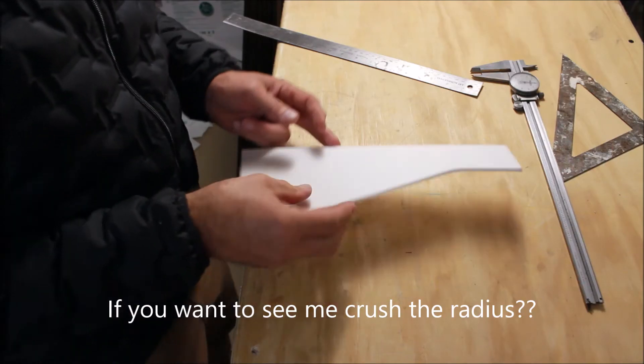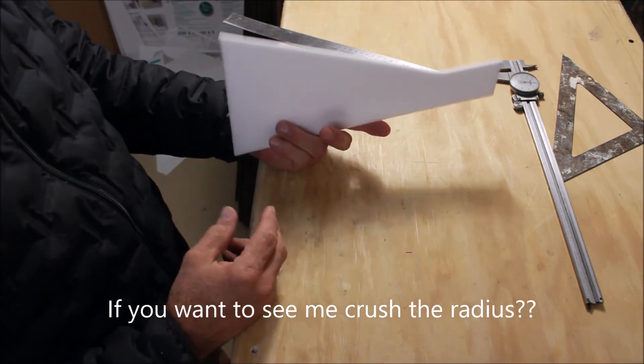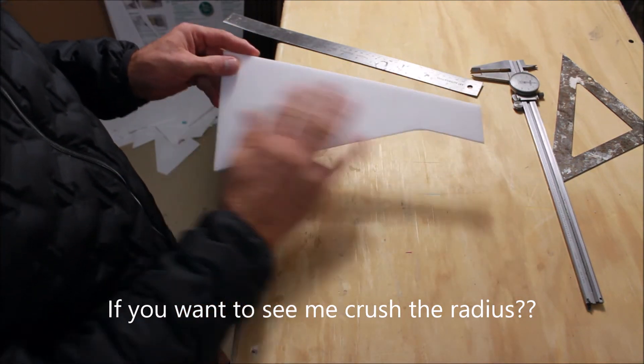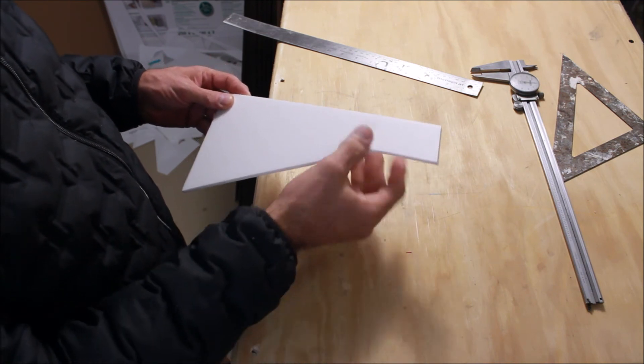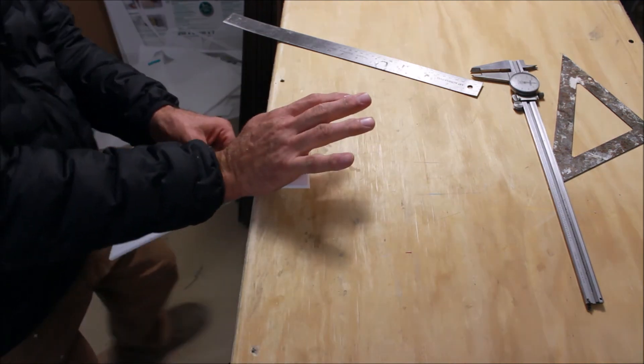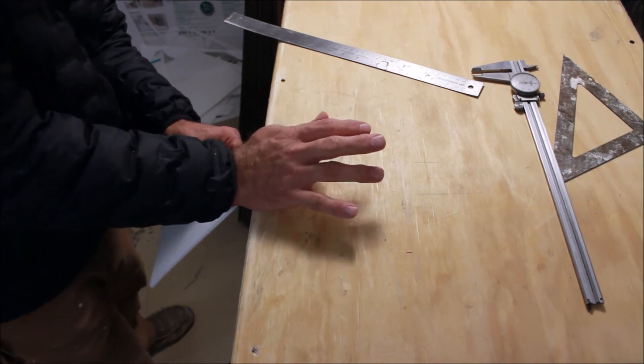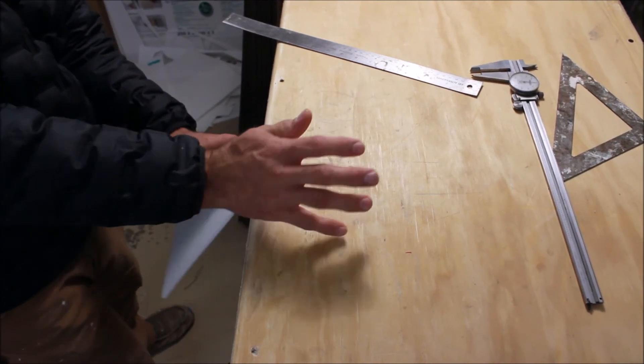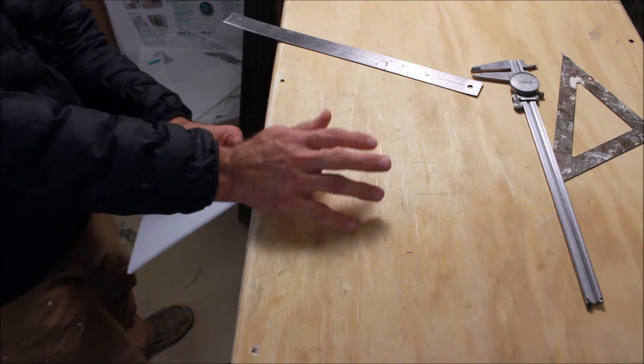Six millimeter Depron. I cut it into a little wing shape here. And what I'd like to do is crush this down to make a little winglet stick up radius. Just start crushing it right there, working it around.